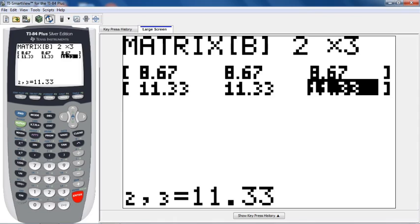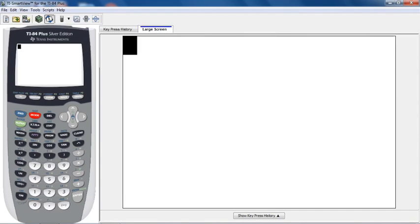All right, so matrix B is all good. Those are our expected counts. Now I'm just going to go quit, get back to my home screen. So second, quit, or second mode, back to the home screen. And let's go get that stat test option again.